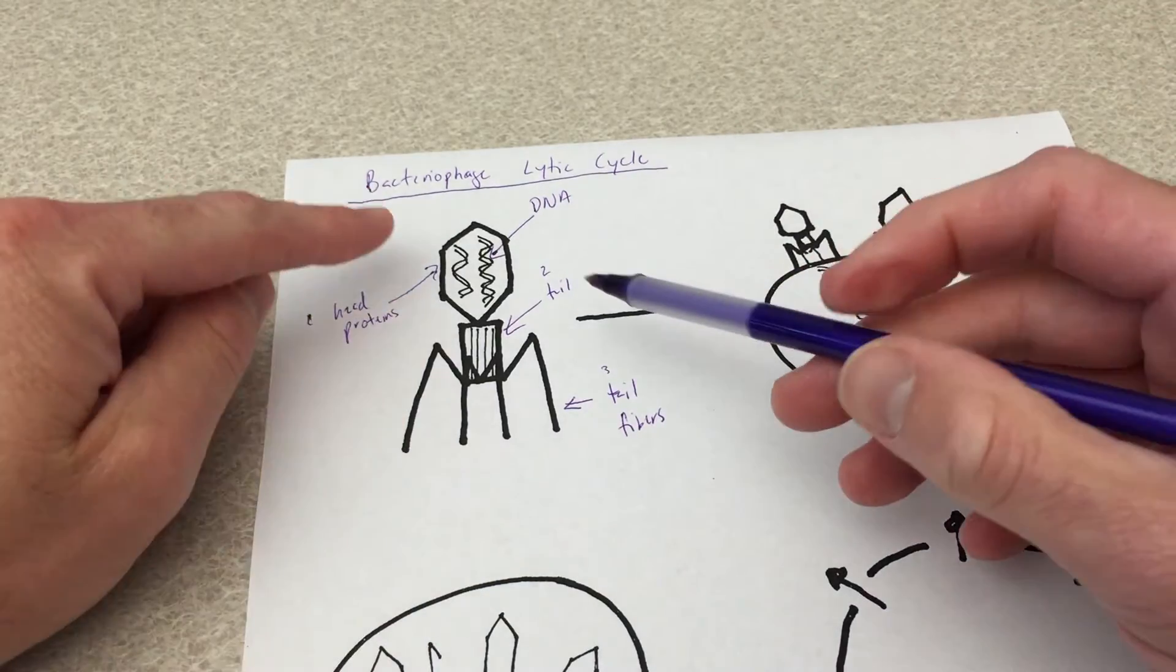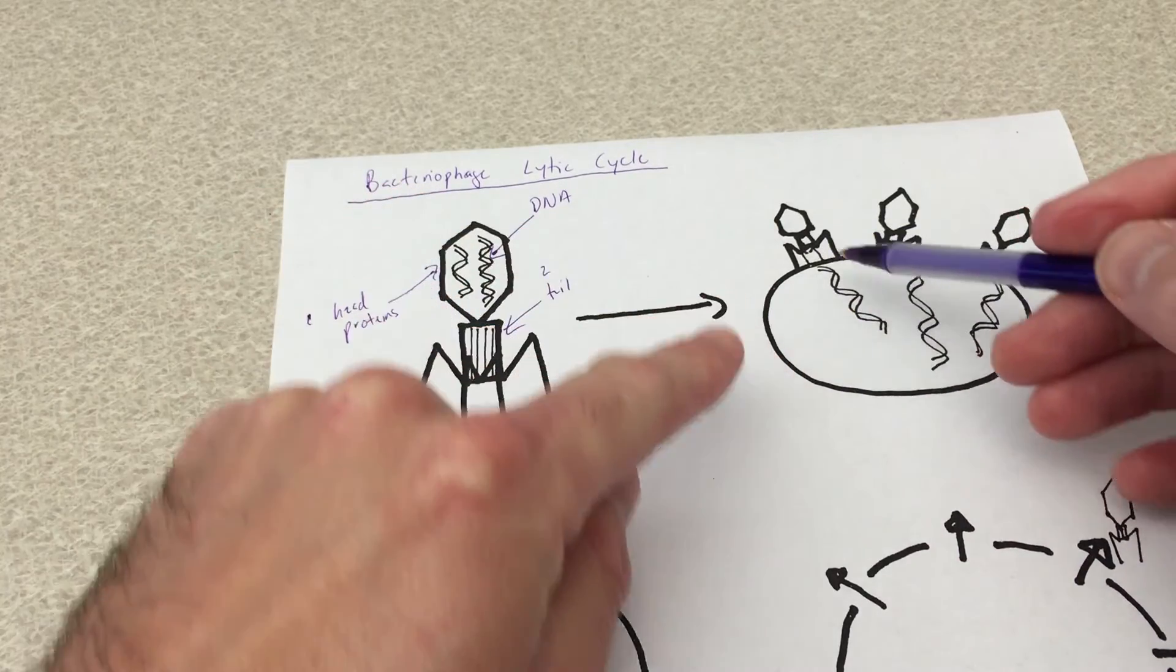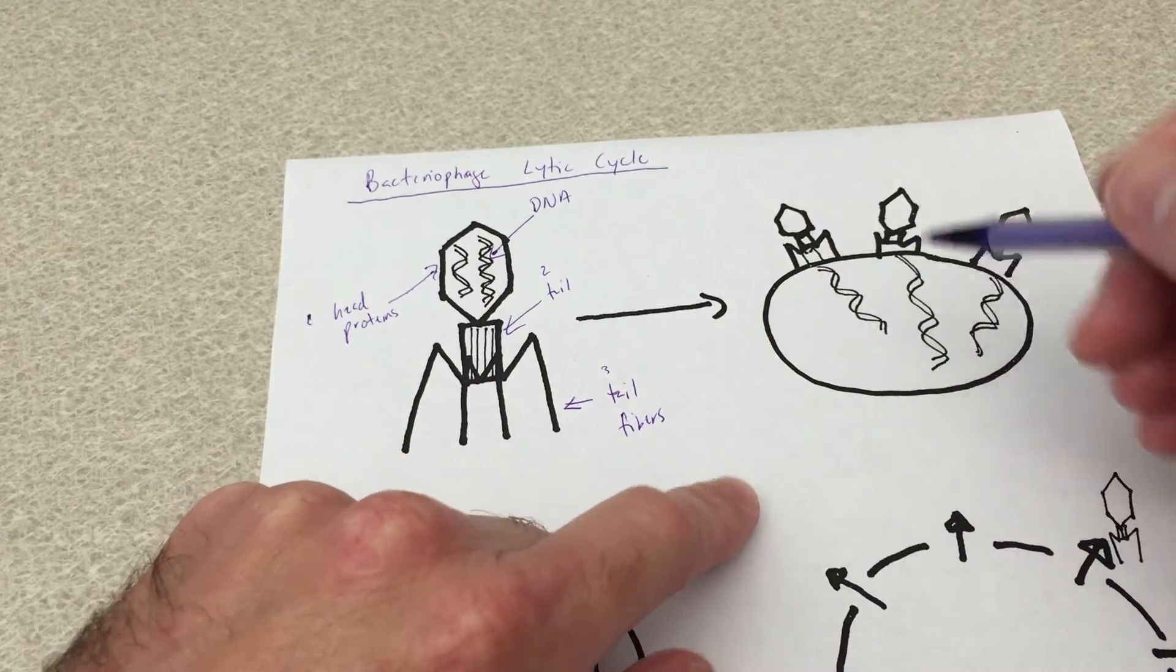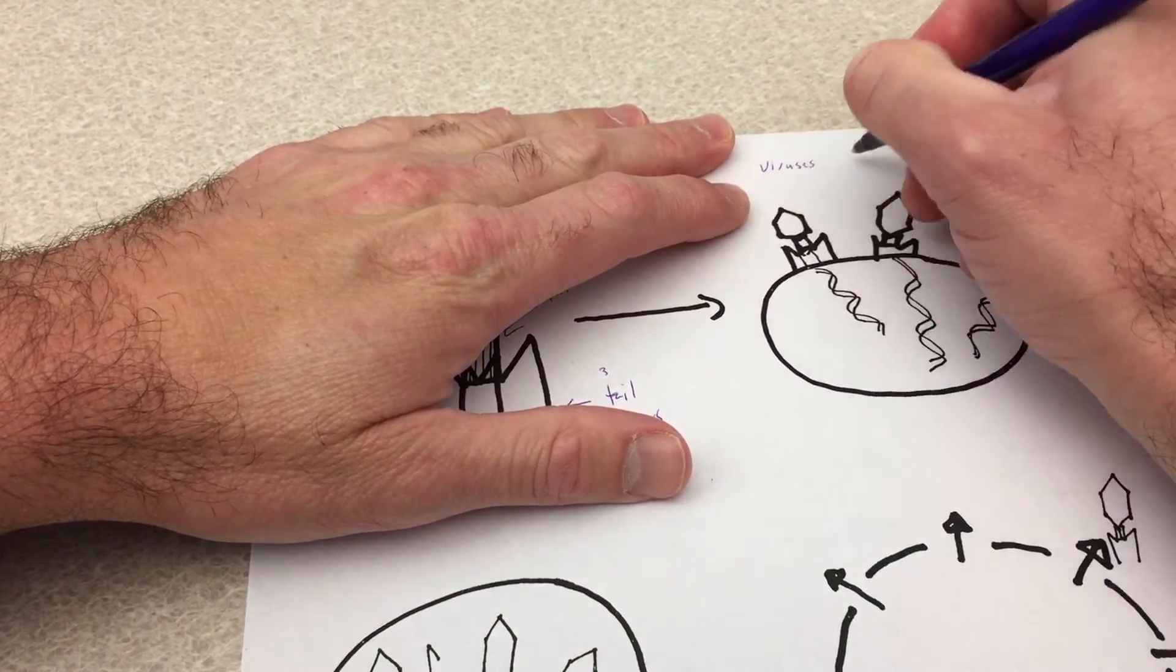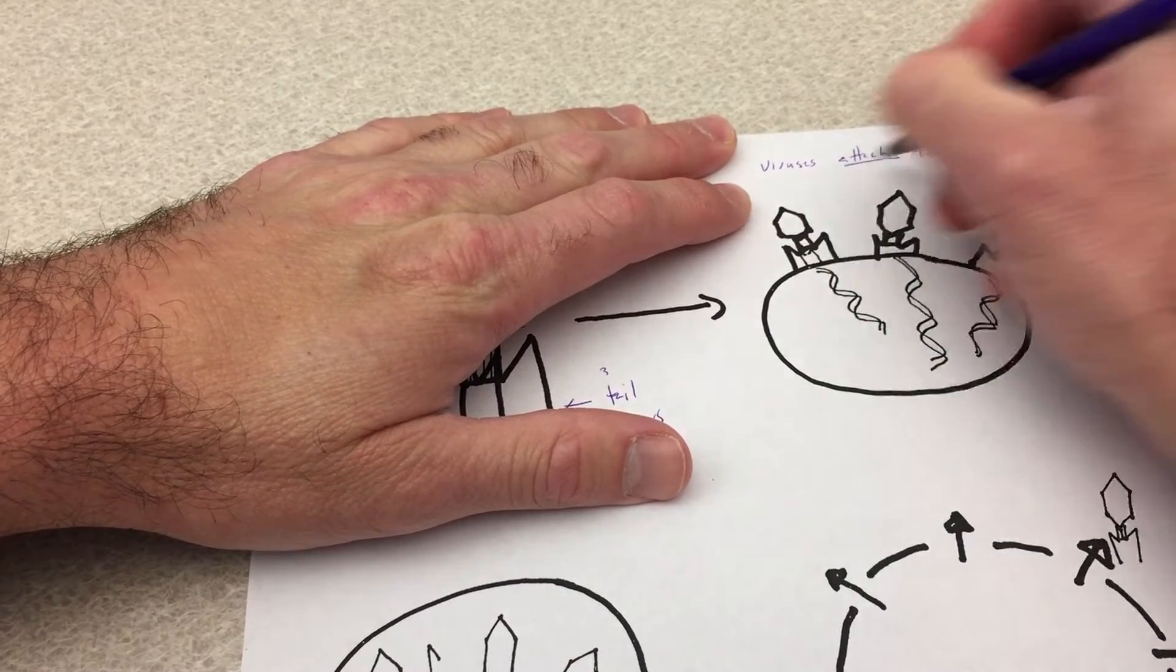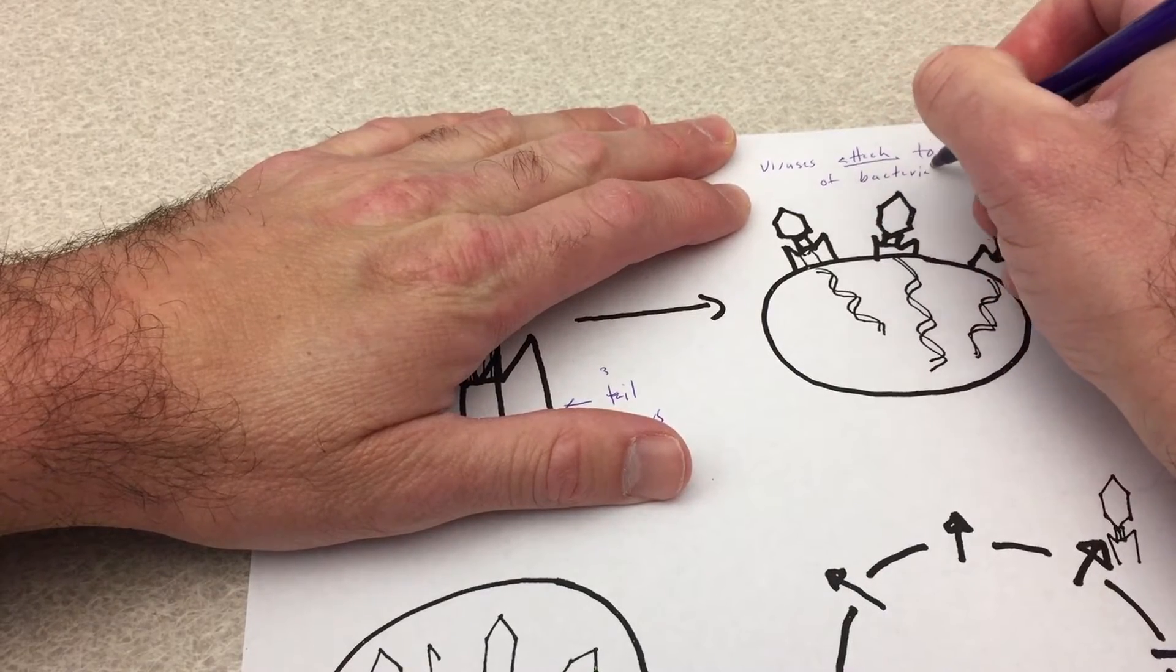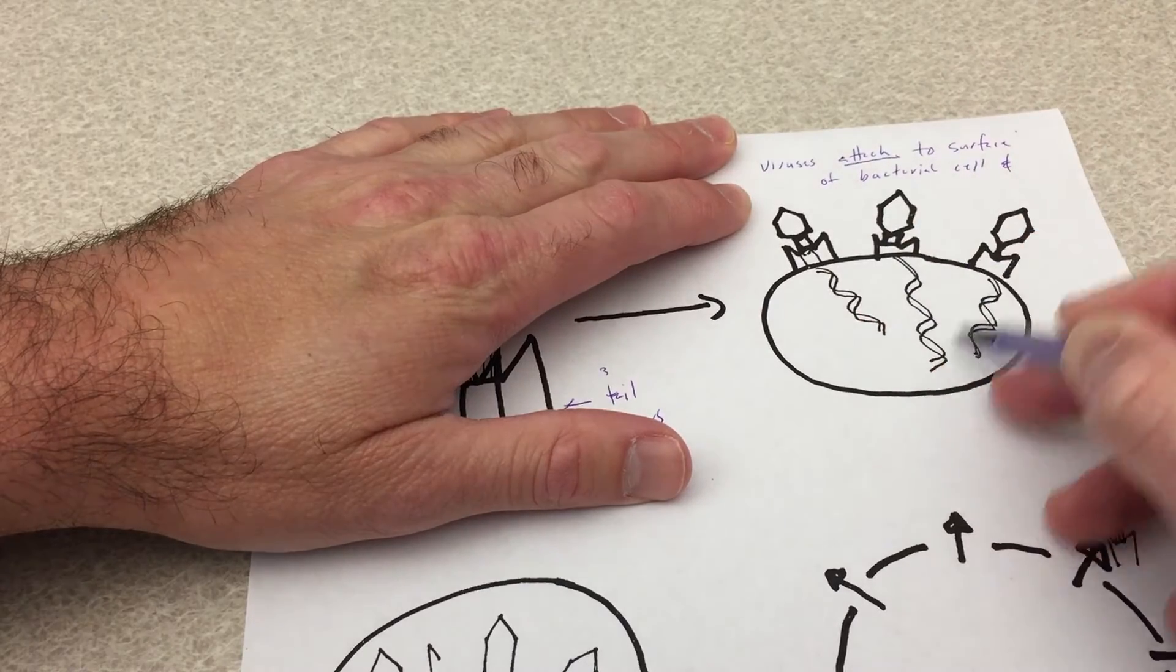Now the first step which occurs in the bacteriophage lytic cycle is viruses can attach via their tail fibers to the surface of a bacterial cell. Viruses attach to the surface of a bacterial cell and inject their genetic material.